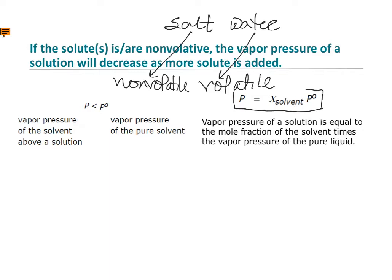In the case where there's only one volatile component, the vapor pressure of the solution is simply the mole fraction of the solvent times the vapor pressure of that solvent when it is pure. And in all cases where you have a volatile solvent with a non-volatile solute, the vapor pressure of the solution will be lower than it was as the pure solvent — hence the colligative effect of vapor pressure lowering.